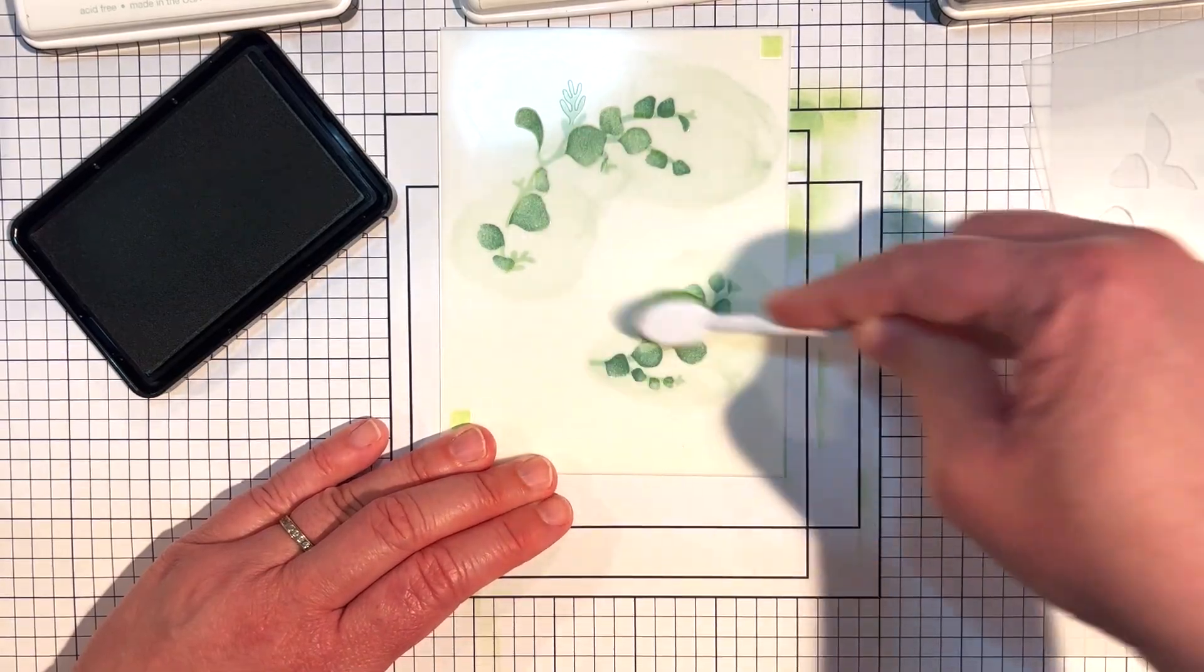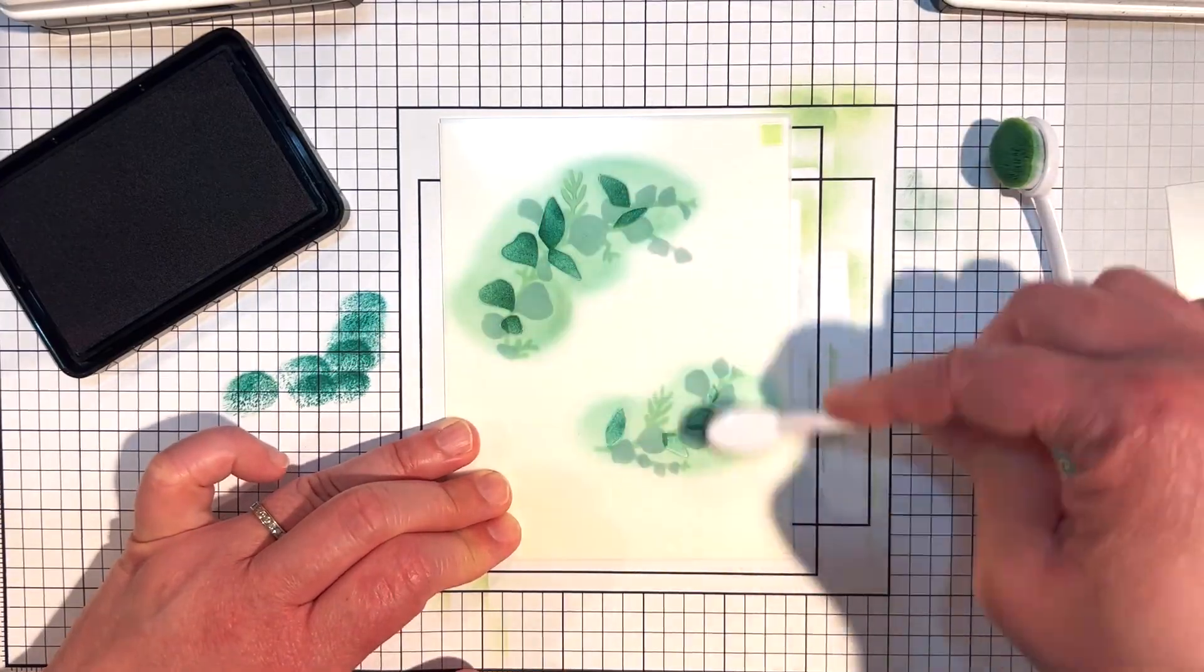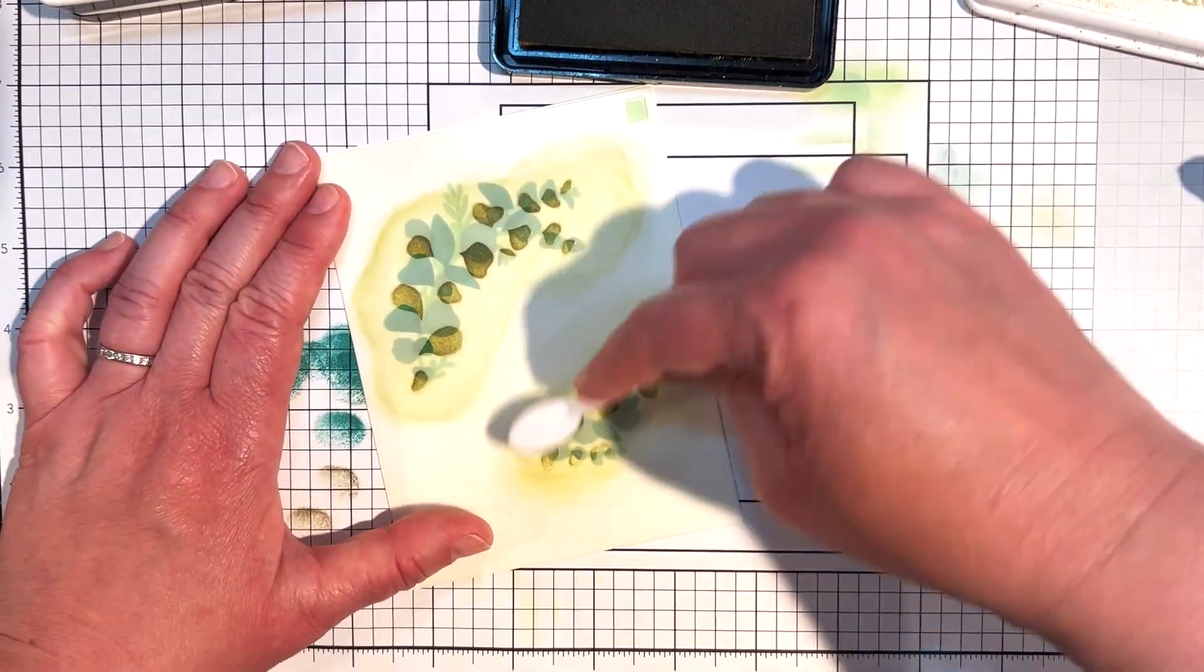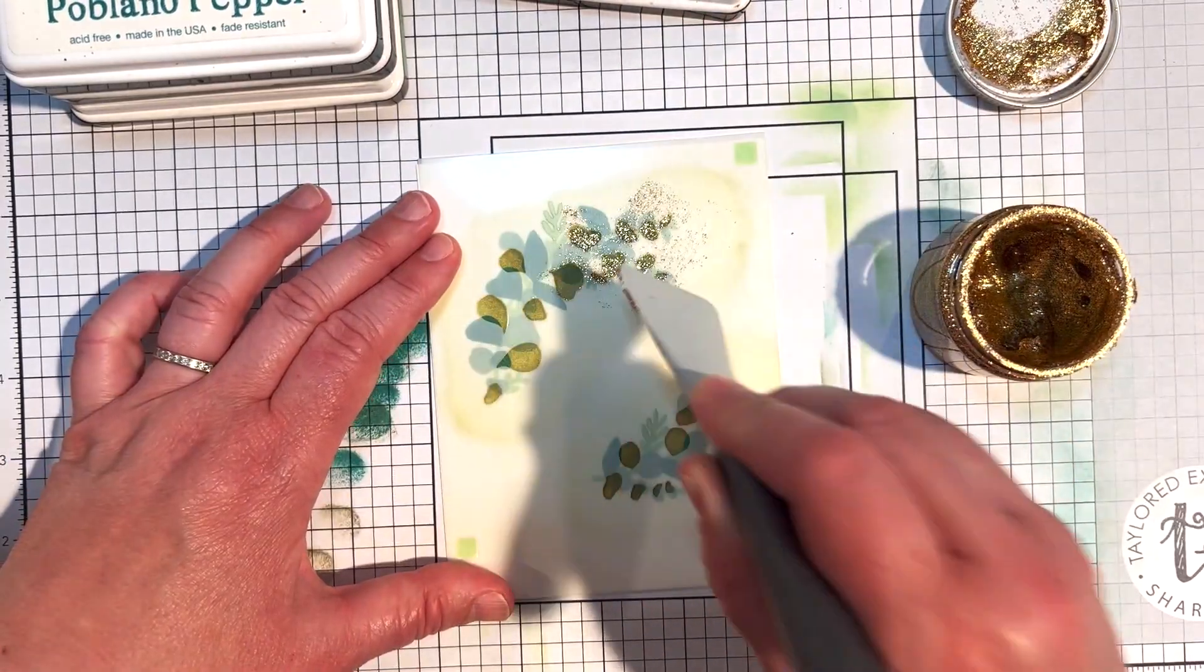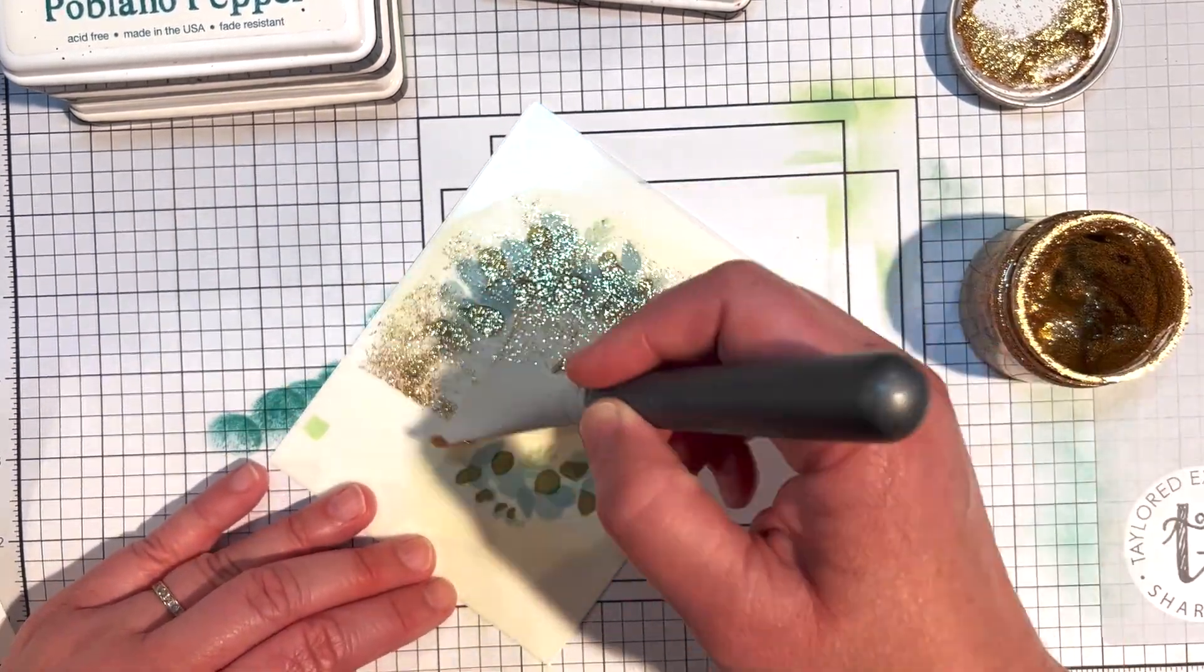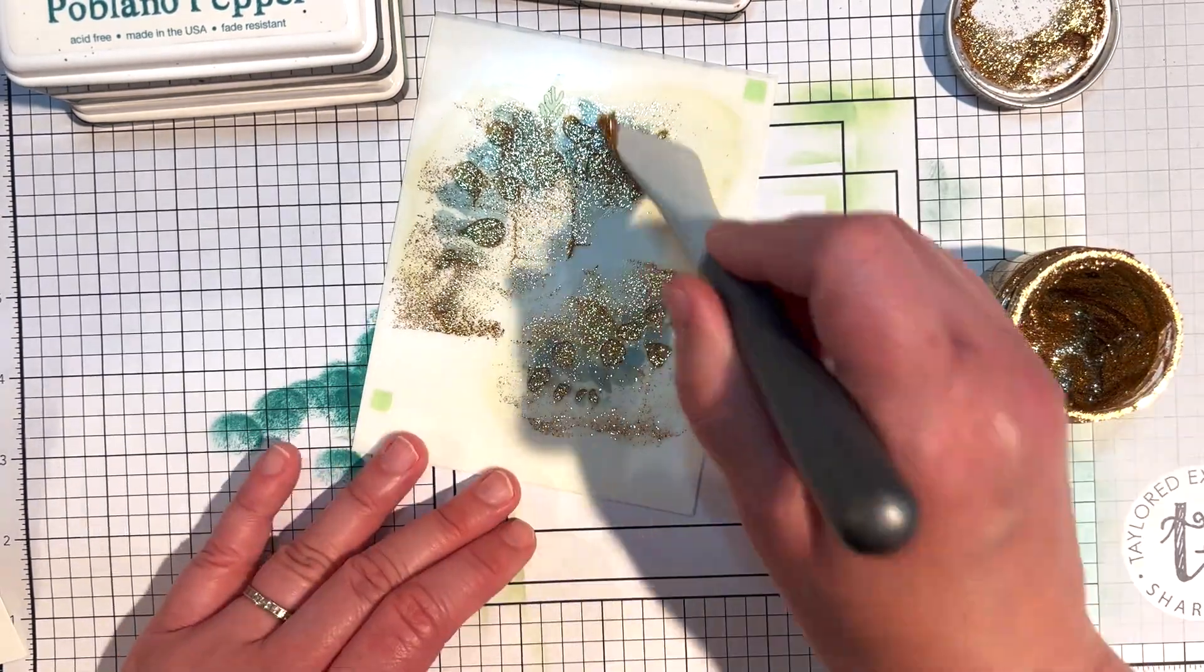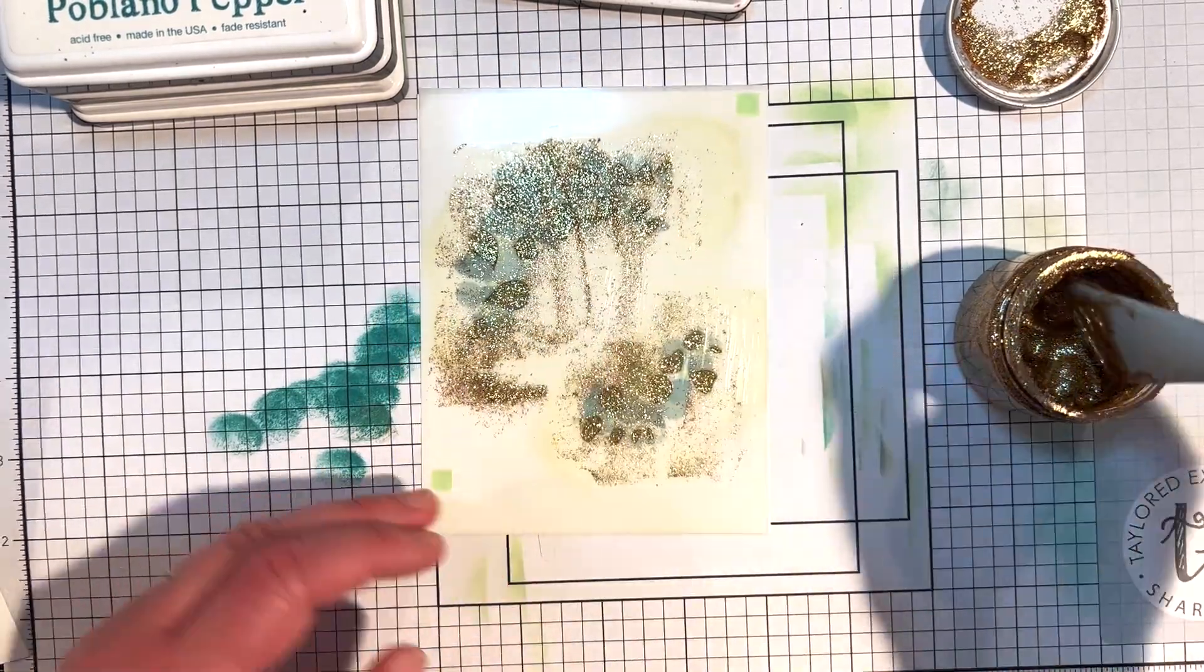For the next layer I stenciled the leaves with poblano pepper ink, and then for the last layer I stenciled the design with avocado ink. Then I decided I wanted to add sparkle, so I put the stencil back into place and added a layer of happy medium gold glitter over the top. I used my nouveau media spatula to apply the glitter paste, and then once I have it scraped over the whole design, I removed the stencil and I'm going to let this dry for about an hour.